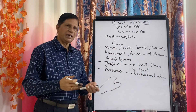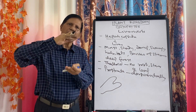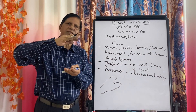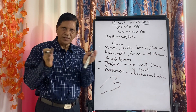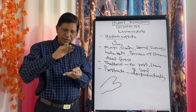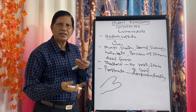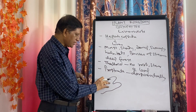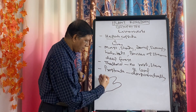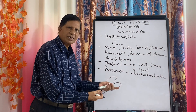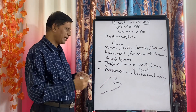Dorsiventrally means we can see one ventral side — the lower side — and the dorsal side on the upper side. This is dorsiventral differentiation: the upper side is the dorsal side and the lower side is the ventral side.